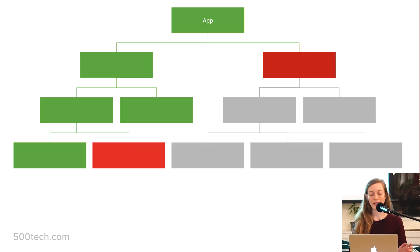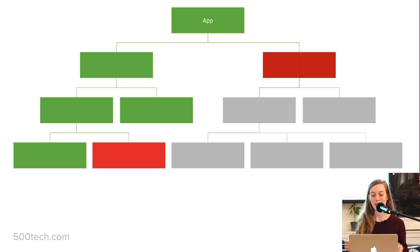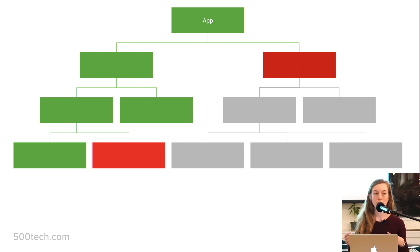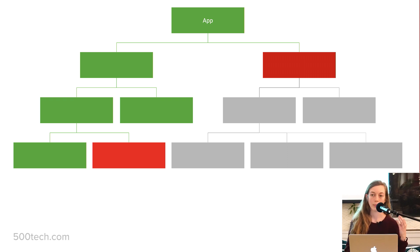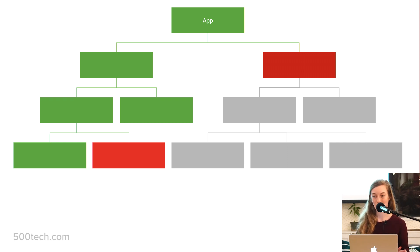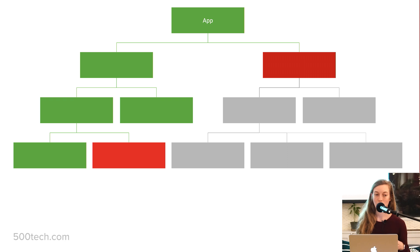Think of your component tree where each box represents one of your components. At the top you have your app, and the green boxes are components that need to be updated while the red ones do not. Typically, if a parent component doesn't update, none of its children are even checked. The goal is to have as many gray unchecked components as possible where you're not performing reconciliation — but you want to be careful to avoid a situation where a child that should have been updated doesn't get updated because its parent was not updated.